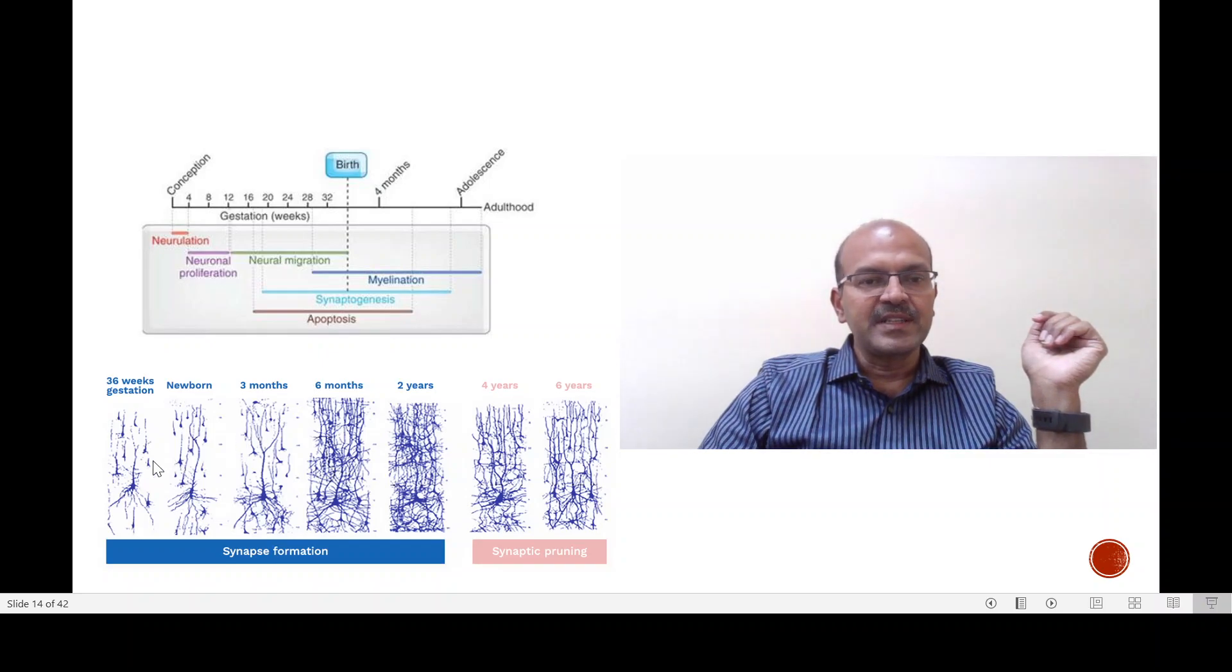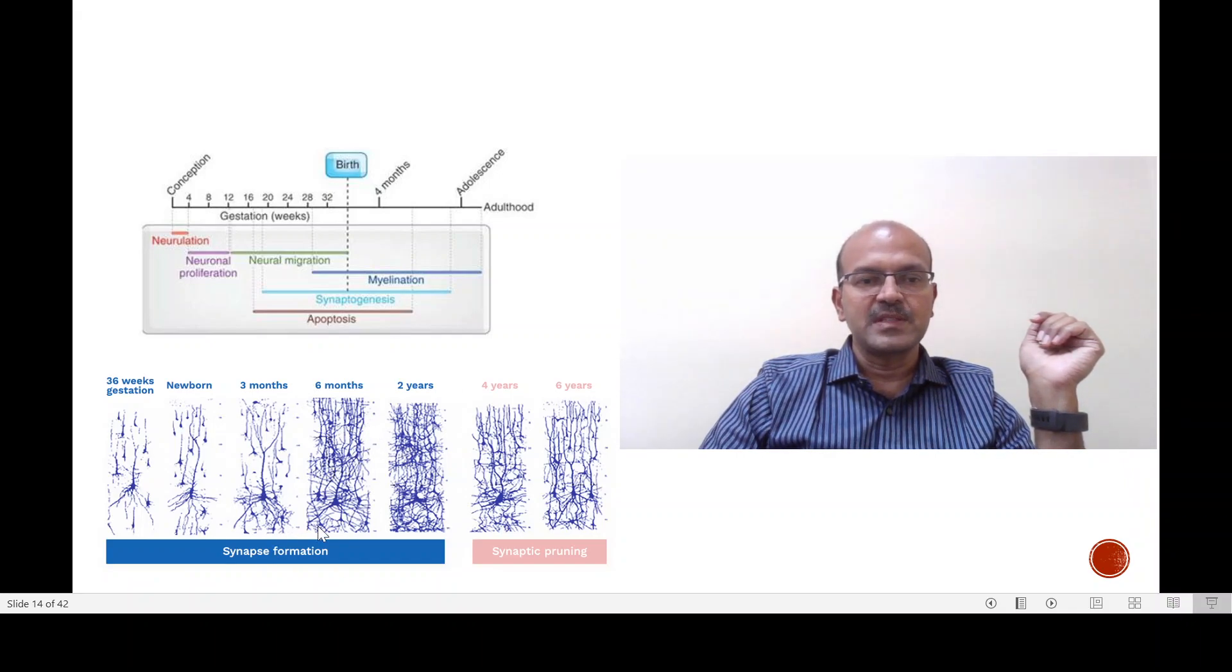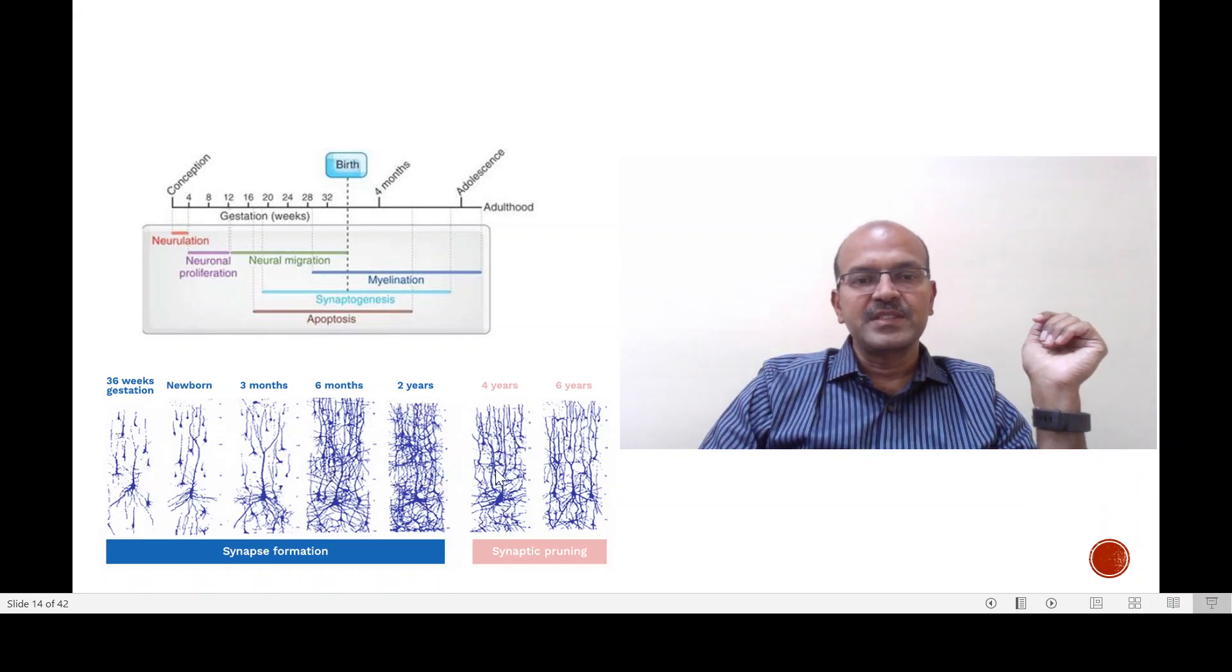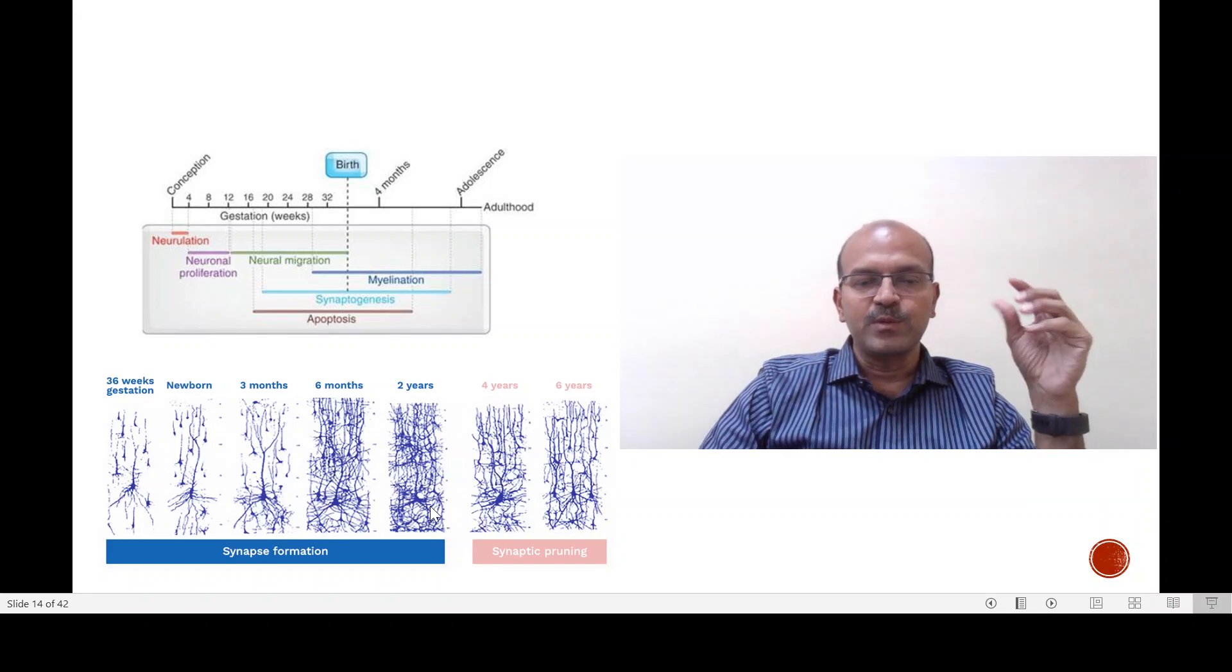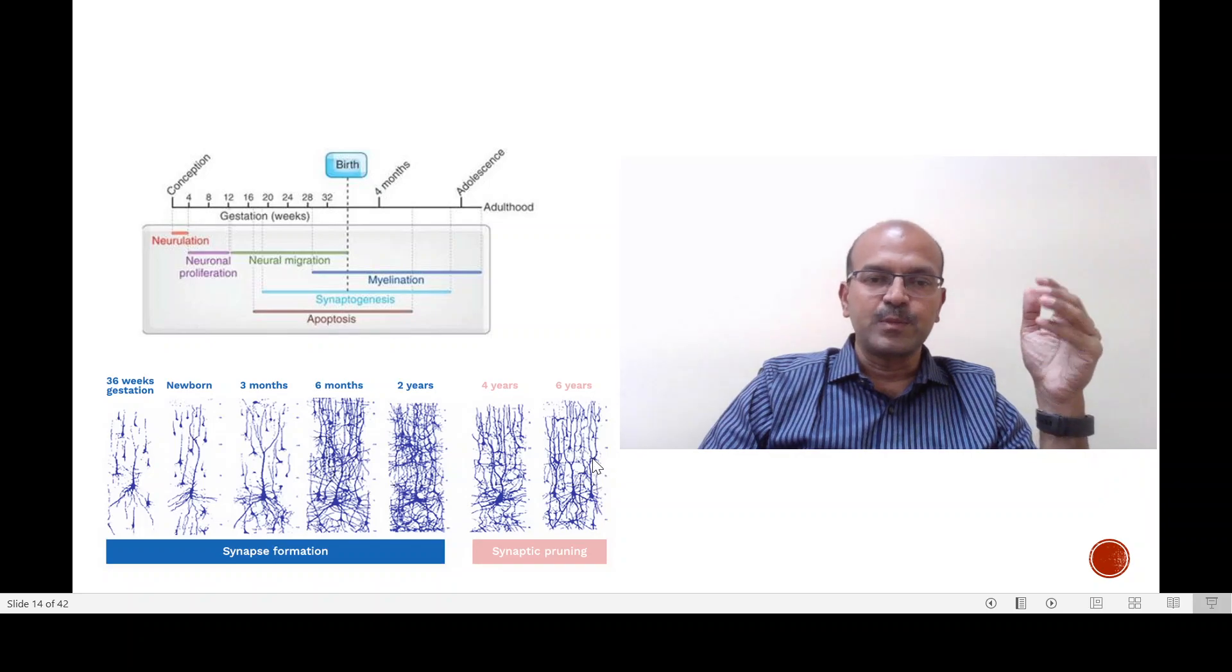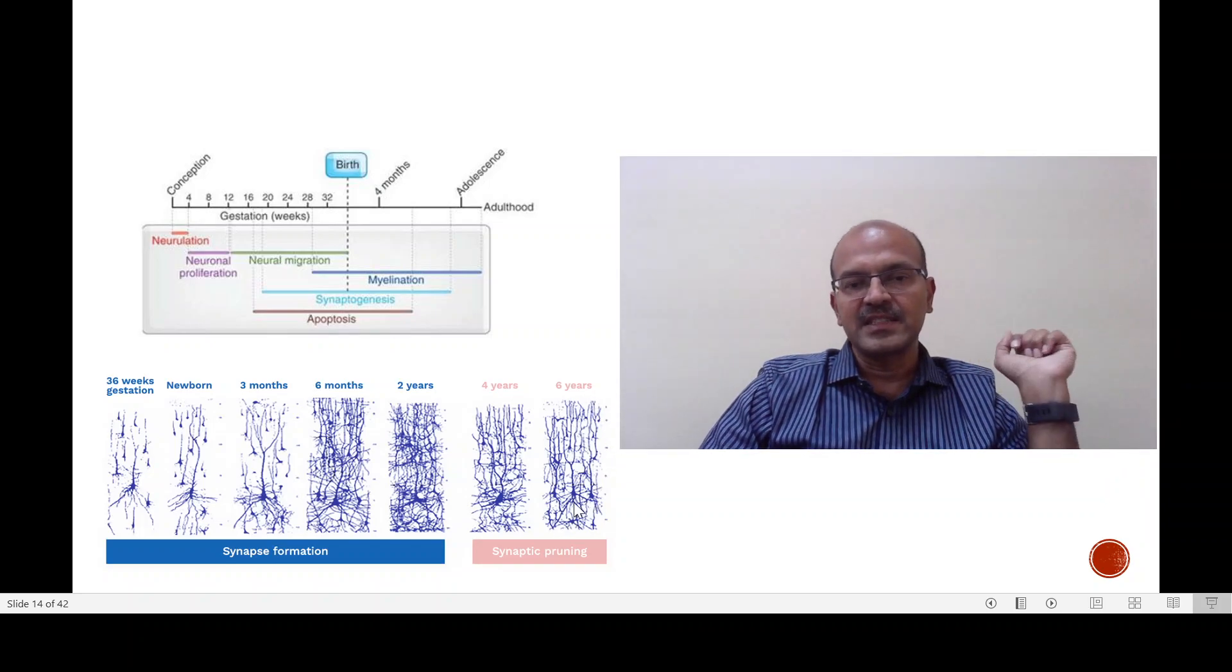The synapse formation is initially very crude. There is rapid development of multiple synapses. You can see the number of synapses is very high and then by maturation the synaptic pruning happens. The ones that are used and more effective are retained while those which don't need to be there are pruned. By six years you can see it's a much less complex pattern but it functions very effectively.